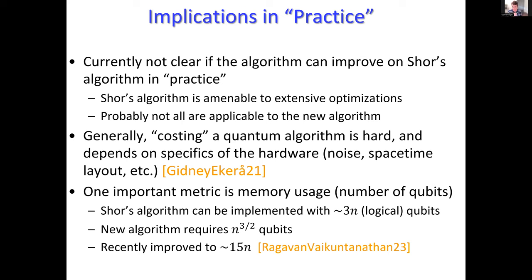With n multiplications each involving n-bit numbers, and assuming fast integer multiplication takes roughly n time, you get n² gates total in the quantum circuit. You need to exponentiate z up to about 2^n to ensure you see the period, since the multiplicative order could be quite large. That's why z can be a 2000-bit number.